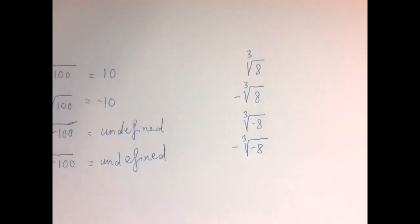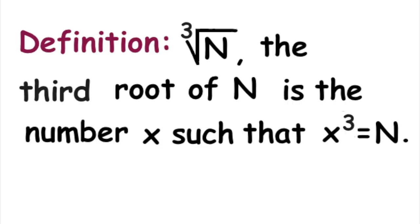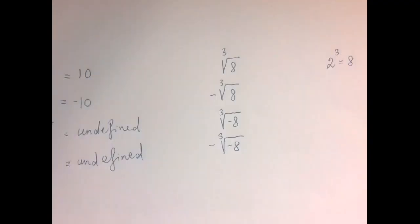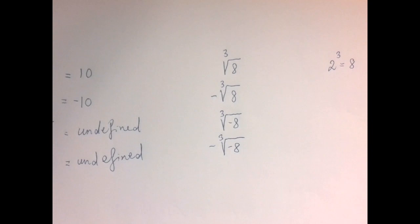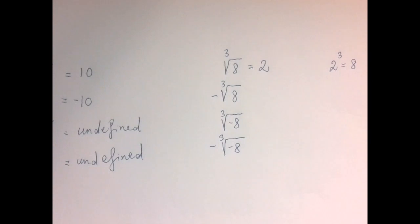Next up, we have similar expressions but now we're talking about the third root. Third root of 8 would be a number that when raised to the third power gives 8. Clearly that is 2, because 2 to the third power is 8. So third root of 8 is 2.